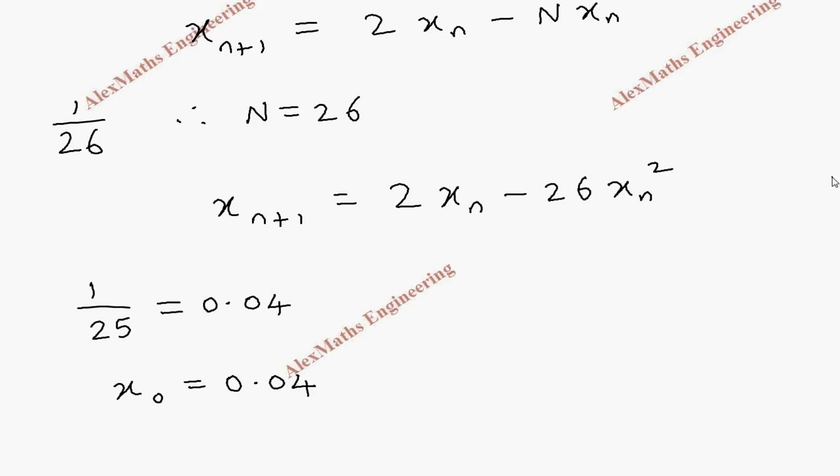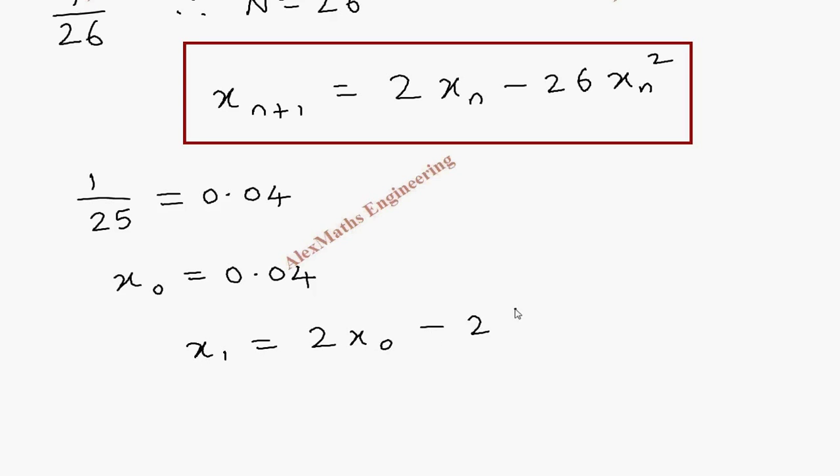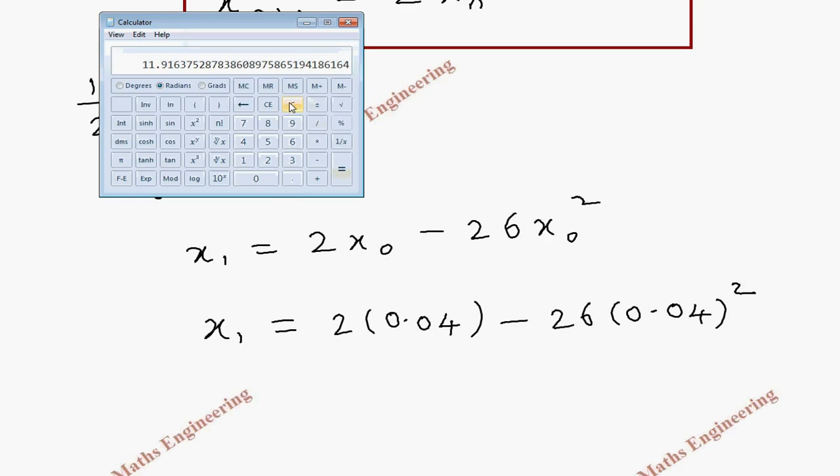So from this we are going to evaluate x_1. x_1 is, writing the formula where substituting n as 0, we get x_1 equal to 2 times x_0 minus 26 times x_0 square. Now this is 2 times 0.04 minus 26 times 0.04 whole square.